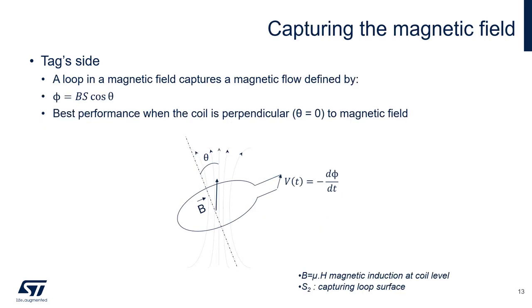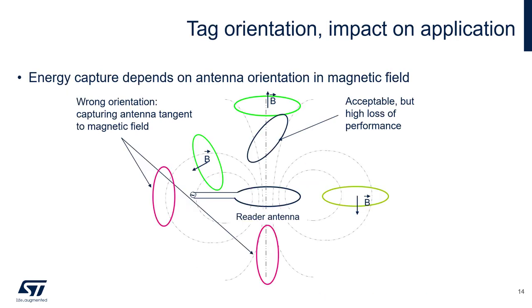To capture the magnetic field, we simply place a loop in the magnetic field. This induces the field into the secondary loop and causes current flow. The best performance is when the coil is perpendicular to the magnetic field. It's important to remember that tag orientation has an impact on the application, because the energy capture depends on the antenna orientation in the magnetic field. An antenna that's perpendicular to the magnetic field will couple the most amount of energy, while antennas tangent to the magnetic field won't couple energy.